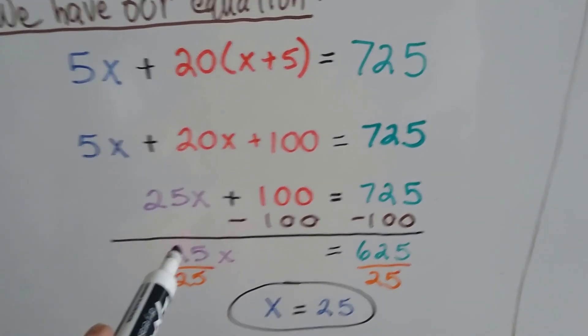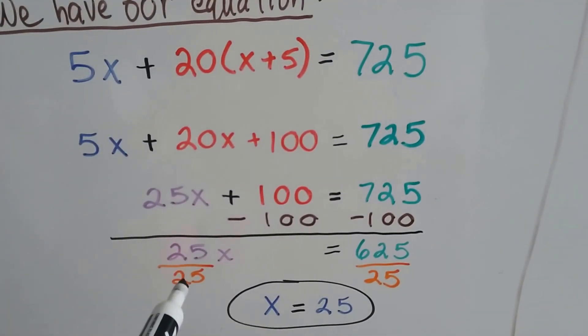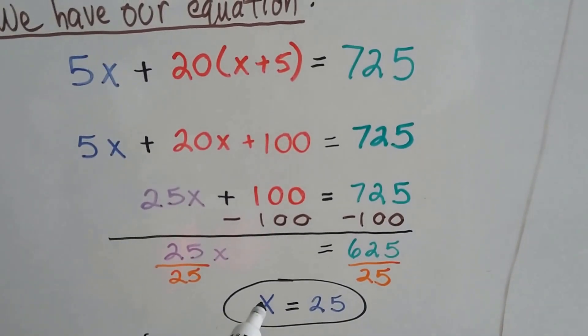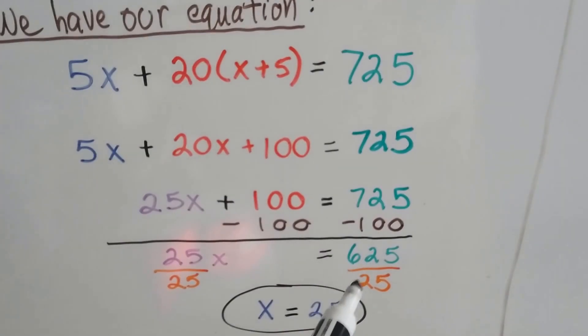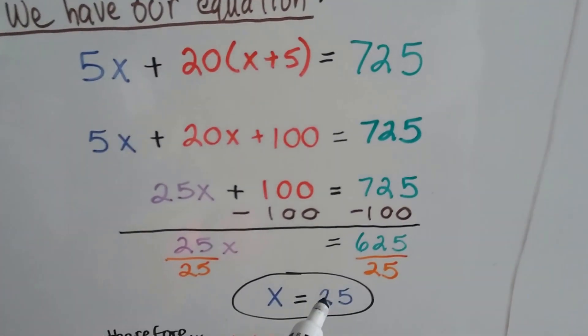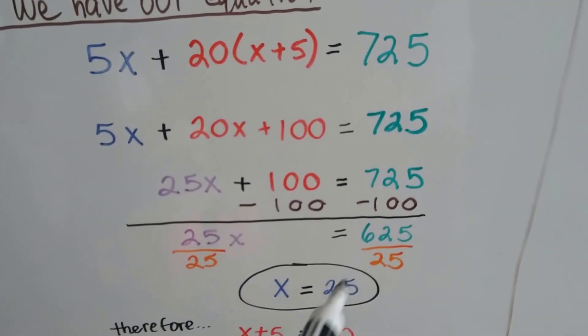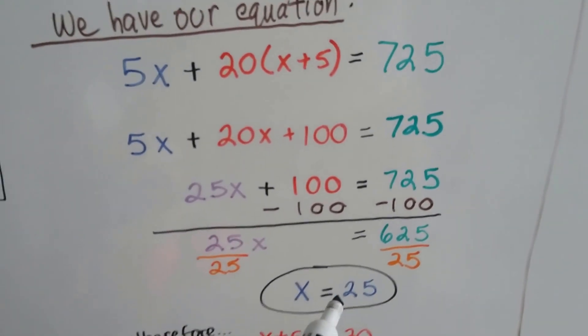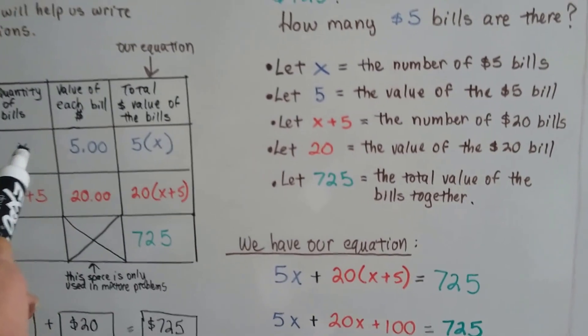We divide both sides by the 25 coefficient. 25 divided by 25 is 1. That's our buddy, the invisible 1 identity property. So, it's just an X. 625 divided by 25 is 25. 25 times 25 is 625. We know that there are 25 $5 bills.